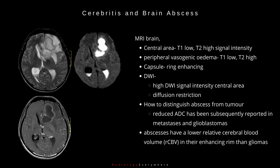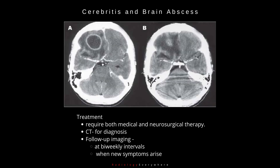On MRI, the brain abscess shows T1 low, T2 high signal intensity in the central area, with T1 low, T2 high peripheral surrounding vasogenic edema, and a ring-enhancing capsule. High DWI signal intensity in the central area shows diffusion restriction; however, reduced ADC has been subsequently reported in metastases and glioblastomas as well. Abscesses have a lower relative cerebral blood volume (rCBV) in their enhancing rim than gliomas.